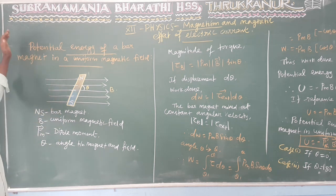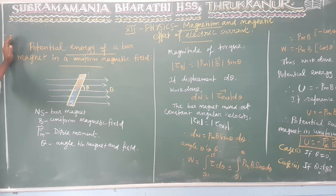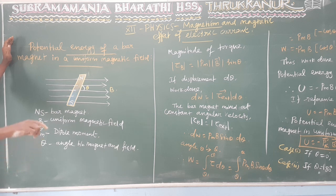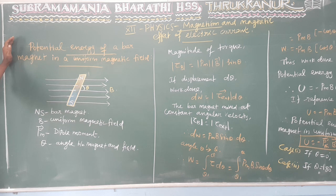Hi students. Last class we talked about the torque experienced by a magnet. The potential energy of a bar magnet in a uniform magnetic field — a bar magnet will rotate and we will create a torque. Tau is equal to PM·B·sin θ.